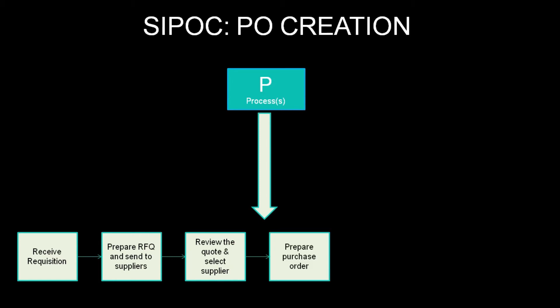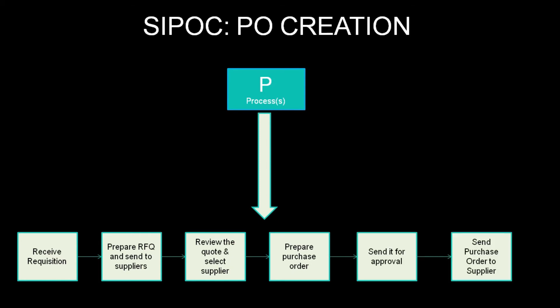The buyer then prepares the purchase order, which is sent for approval. Once the purchase order is approved, it is sent to the supplier.